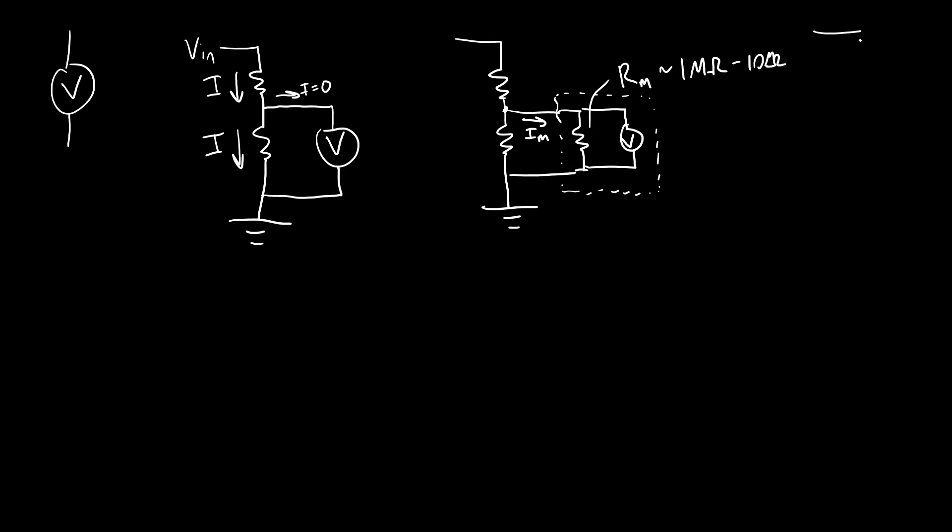Because originally, if I had my voltage divider with no multimeter attached at all, I have R1, R2, my current through here would be determined by Ohm's law and the equivalent resistance of these two resistors. But by putting another resistor in parallel with R2, I have changed the equivalent resistance here, that's going to change the current, and it's going to change the voltage at this point, or the voltage that I'm measuring.